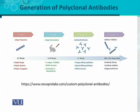Phase one is based on antigenic preparation and lasts for two to three weeks. In this phase, peptide synthesis takes place if we are preparing it inside the lab, or we prepare the conjugate of the peptide with the adjuvant. That is an important aspect of the first phase of polyclonal antibody generation.